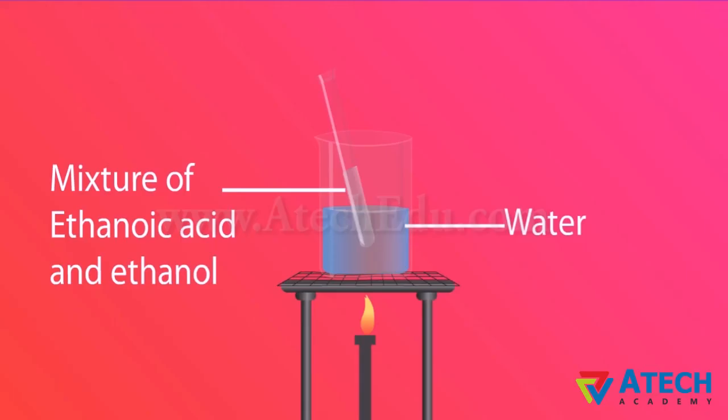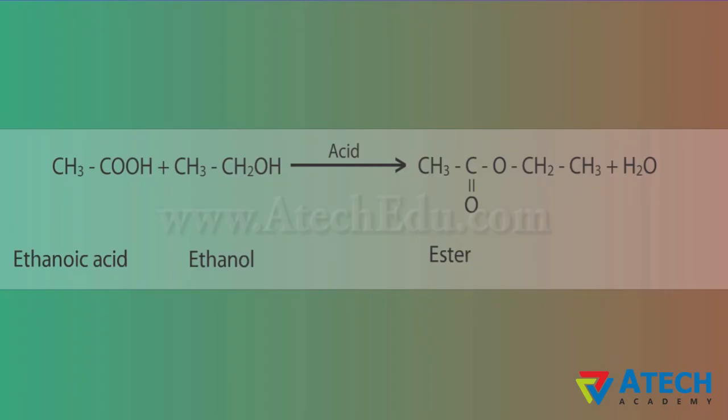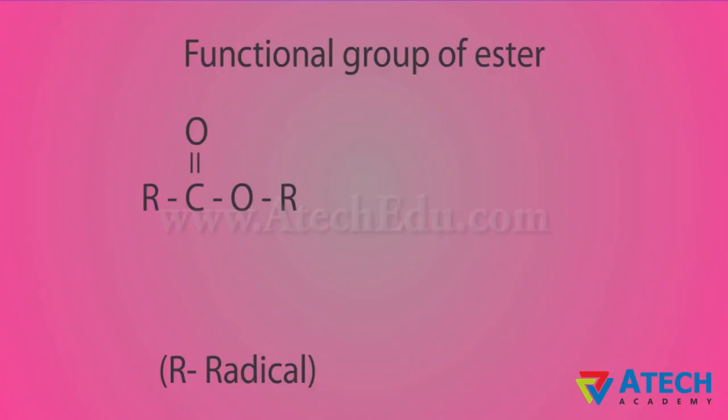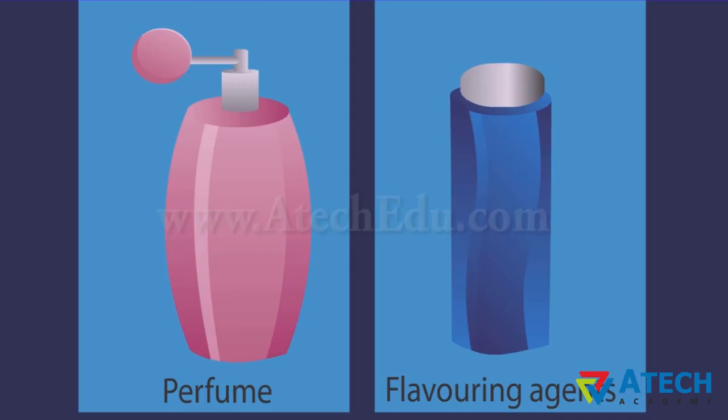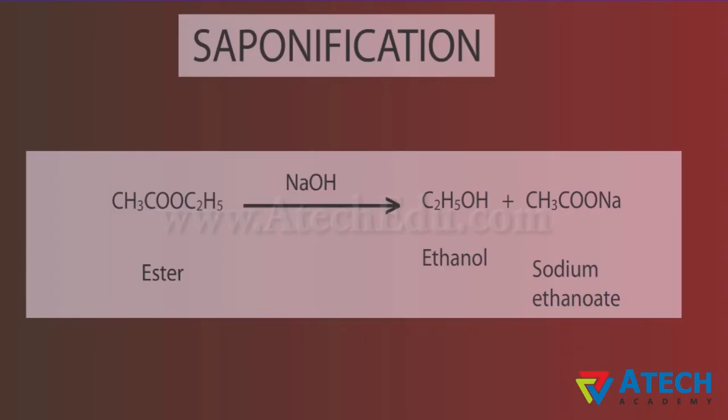Esters are most commonly formed by reaction of an acid and an alcohol. Ethanoic acid reacts with absolute ethanol in the presence of an acid catalyst to give an ester. This is the functional group of an ester. Esters are sweet smelling substances. These are used in making perfumes and as flavoring agents. Esters react with acids or bases to give back the alcohol and the carboxylic acid.